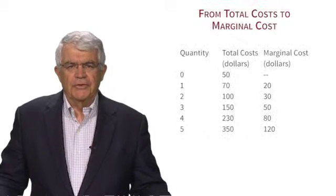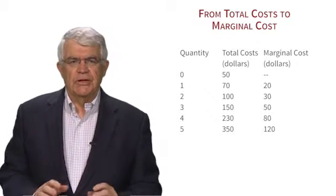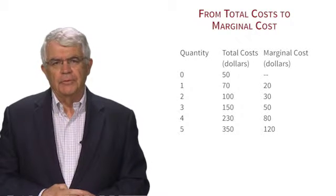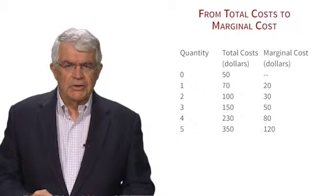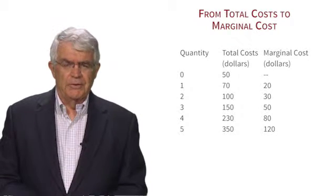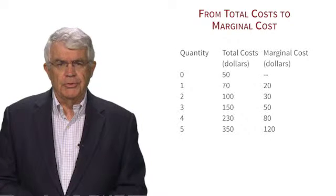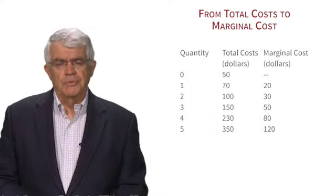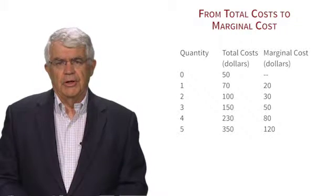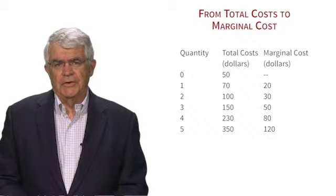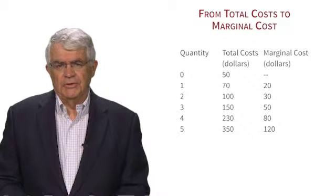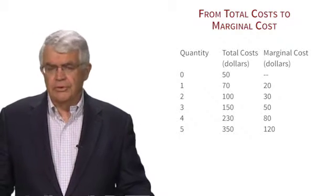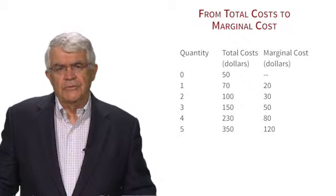Now let's look more carefully at costs. The table shows quantity of pumpkins produced in the first column — one, two, three, four, five — and total costs in the second: 50, 70, 100, etc. It also introduces a new concept: marginal cost. Marginal cost is the additional cost to produce one more pumpkin. For example, producing one pumpkin rather than none costs $70 rather than $50, so marginal cost is $20. Producing three rather than two raises costs from $100 to $150, a marginal cost of $50.